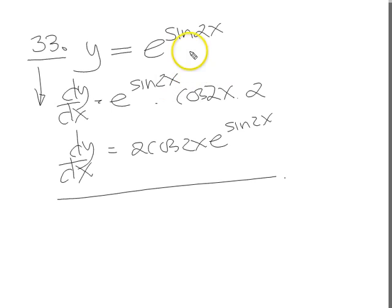All right, let's just run that through again so we're all happy. So e to the something. Apply the function of a function rule. E to the something differentiates to e to the something multiplied by the something differentiated. The something differentiated, we need to differentiate sine 2x.